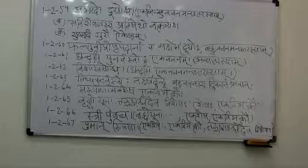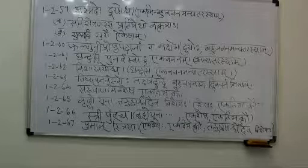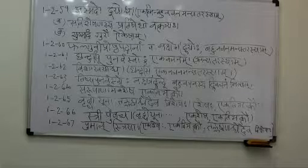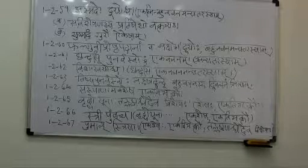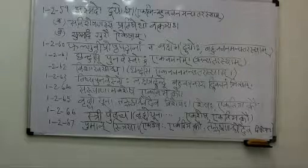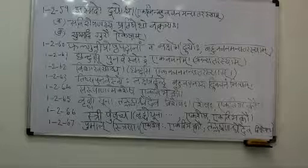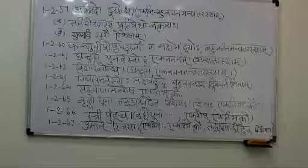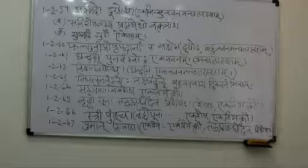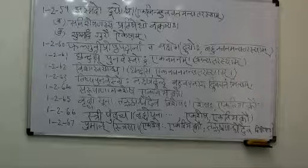Asmadaha is the shashthi ekavachanam of the word ASMAD. Asmad is the word we have learnt in Sarvanama, the Sarvadi Gana. Asmad relates to 'I' in singular number, 'we two' in dual number, and 'we' in plural. Aham is ekavachanam, Avam is dvivachanam, Vayam is bahuvachanam.